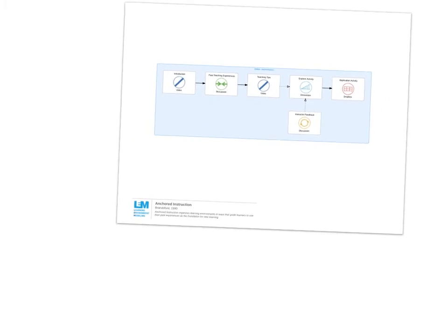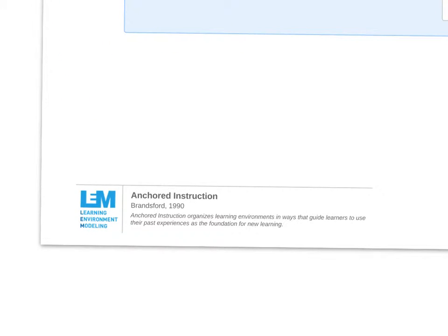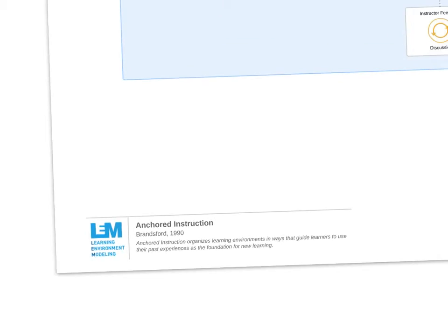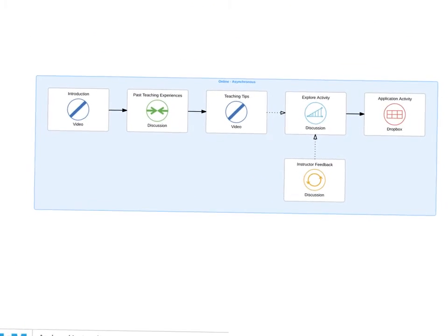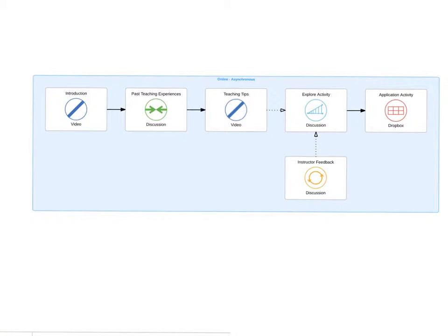The next model is Anchored Instruction. Anchored Instruction is about using prior learning to set up future learning. In this example, it begins with an introduction video introducing the topic, then moves to a dialogue or discussion around past teaching experiences. This part is key in Anchored Instruction — we're providing context from individual learners' past experiences, in this case teaching experiences.